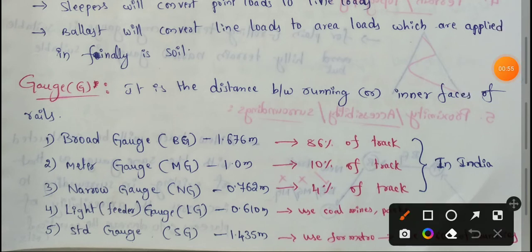In India, we have three types of gauges: broad gauge, meter gauge, and narrow gauge.